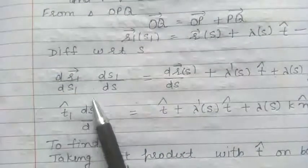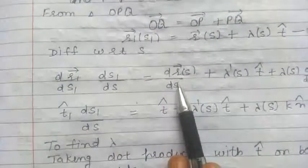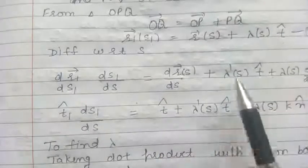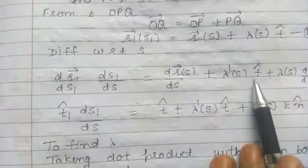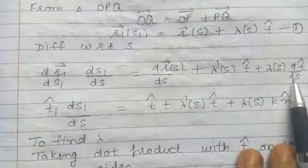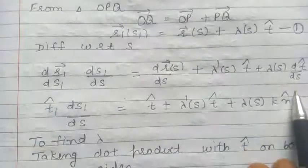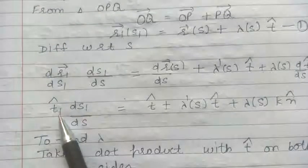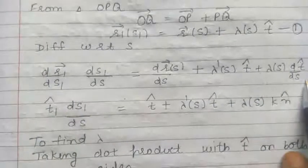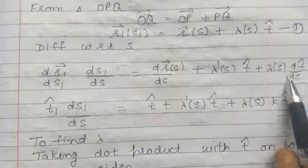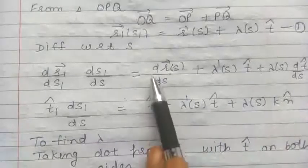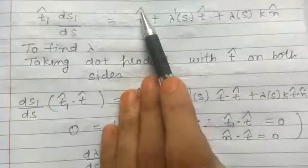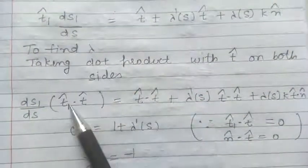Now differentiating with respect to S: the derivative of R1 is dR1/dS1 times dS1/dS, the derivative of R is dR/dS, and by the product rule: lambda dash times T cap plus lambda times the derivative of T cap. Here dR1/dS1 is the vector T1 cap. By the Serret-Frenet formula, dT cap/dS is k times N cap, and dR/dS is the vector T cap.